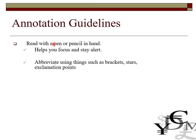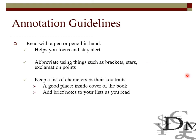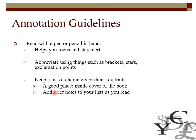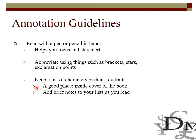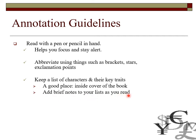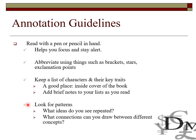When we're annotating, we're reading with a pen or a pencil in our hand — this really helps us stay focused and alert. We abbreviate and maximize efficiency using things such as brackets, stars, and exclamation points. Keep a list of characters and their key traits; a good place is inside the cover of the book, or on a folded piece of paper used as a bookmark — especially useful for novels like To Kill a Mockingbird or Romeo and Juliet. We're also looking for patterns: what ideas are repeated in the text, and what connections can we draw between concepts?